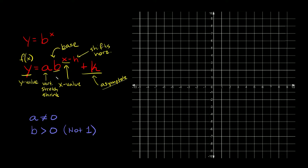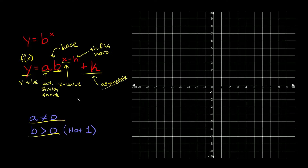Just a couple of rules: 'a' can never be zero — it can be any positive or negative number, just not zero. And 'b' has to be a positive number, but it can't be one — any positive number except one. You don't necessarily have to memorize all of this, but it's helpful. As long as you do your XY table correctly, you'll be fine. I'm going to show you how to do that right now with a few examples.